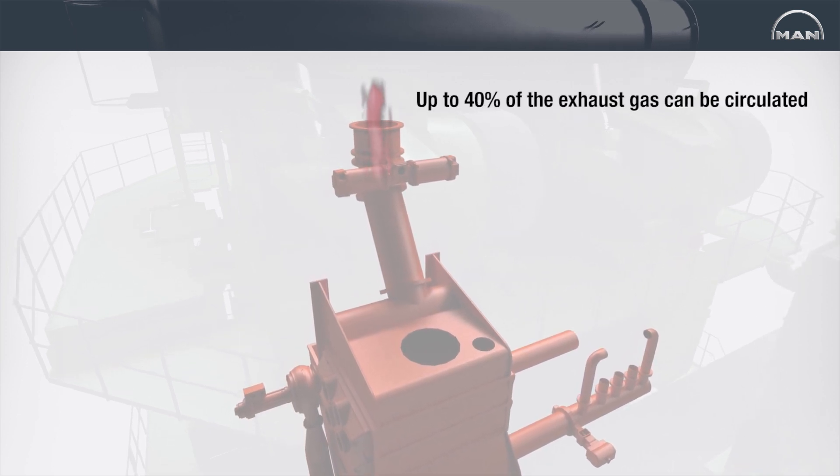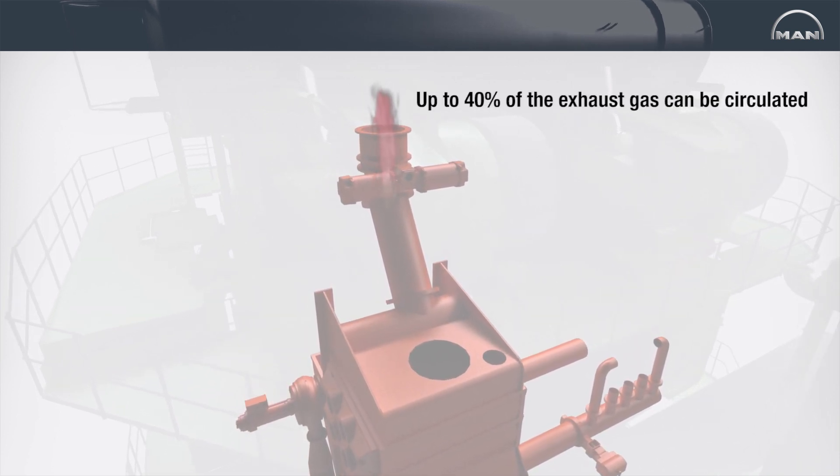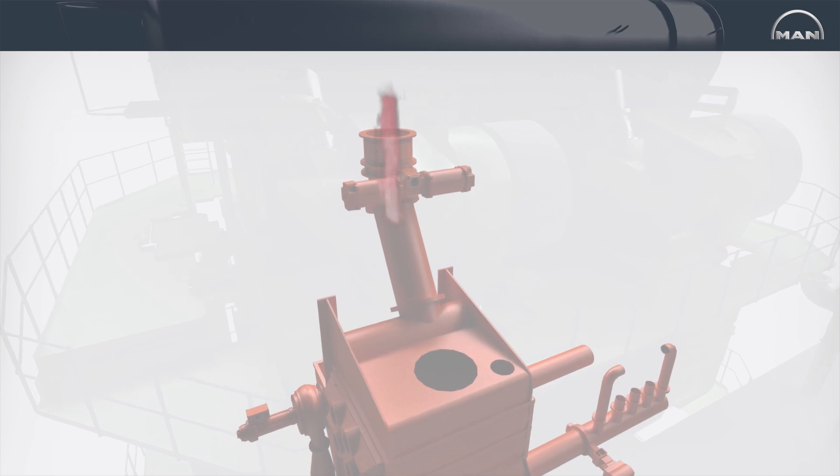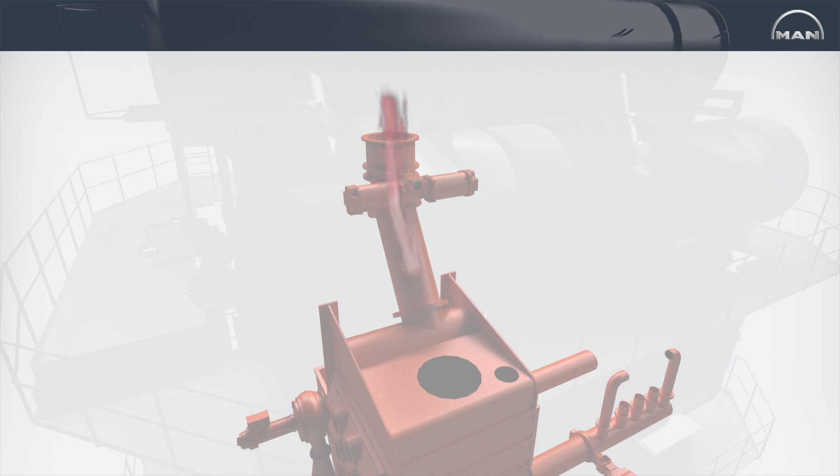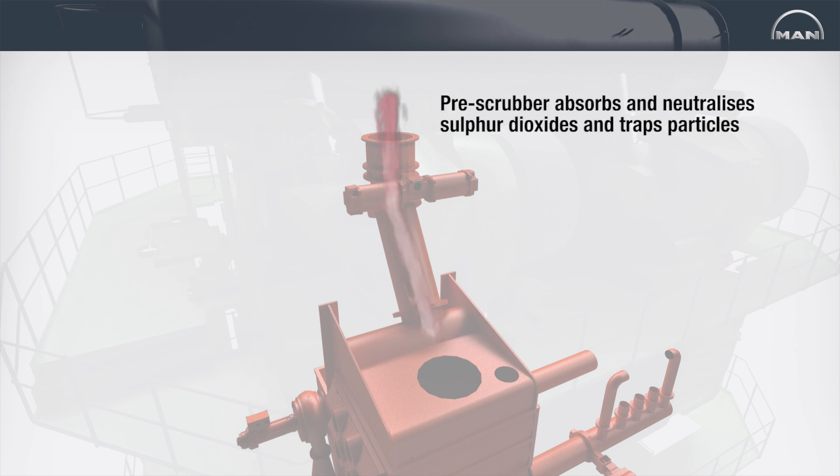In this way, up to 40% of the exhaust gas can be circulated through the EGR string of the system. The exhaust gas in the EGR string is first cooled down from 200 to 500 degrees Celsius to around 80 degrees Celsius by means of a pre-scrubber that absorbs and neutralizes sulfur dioxides and traps particles.